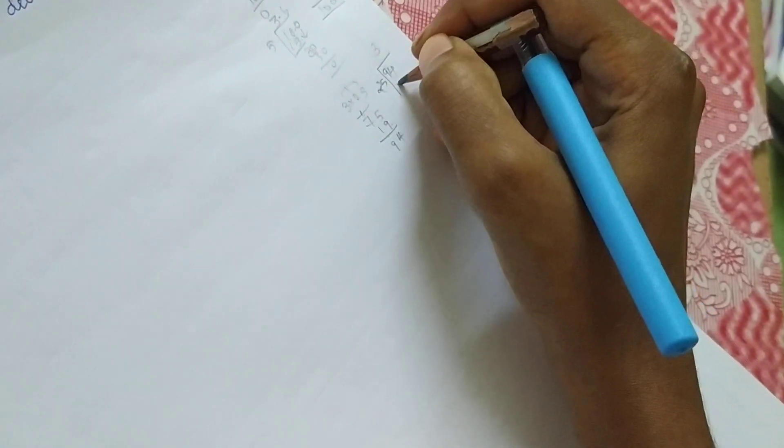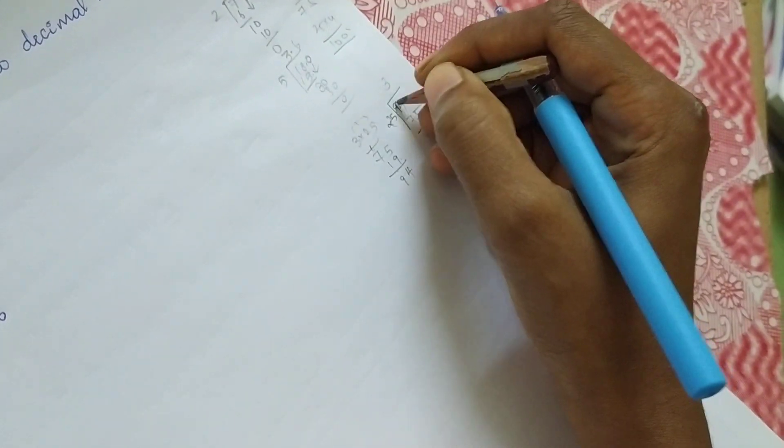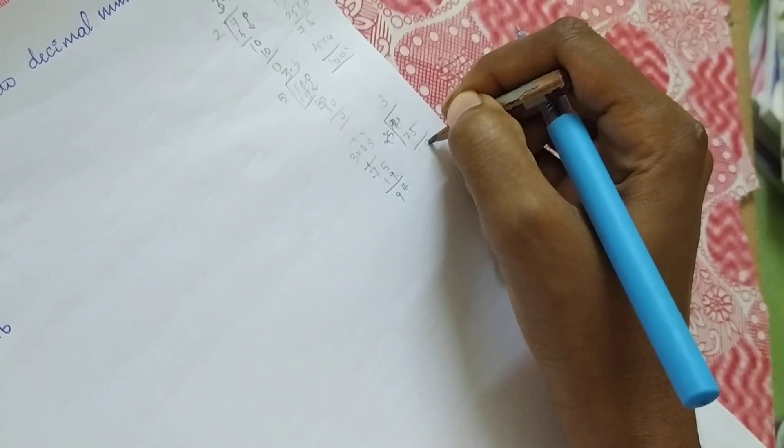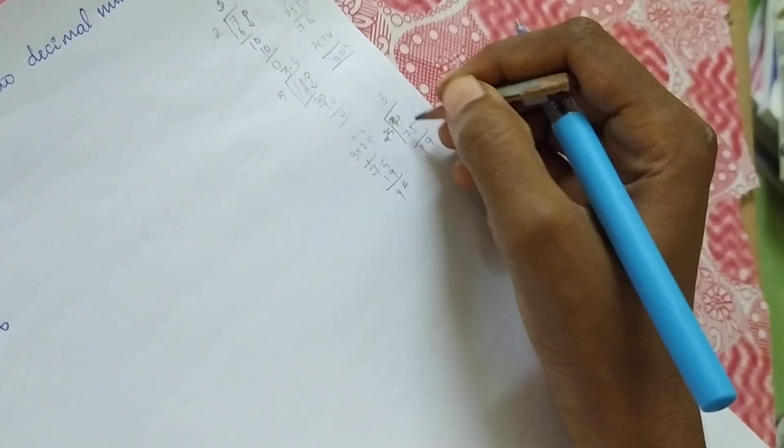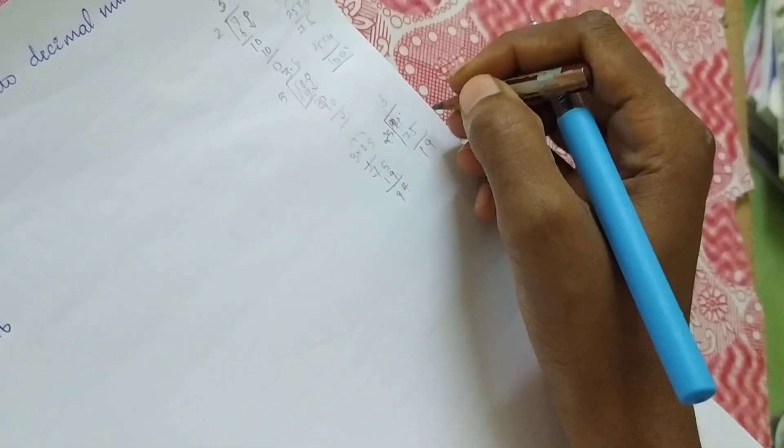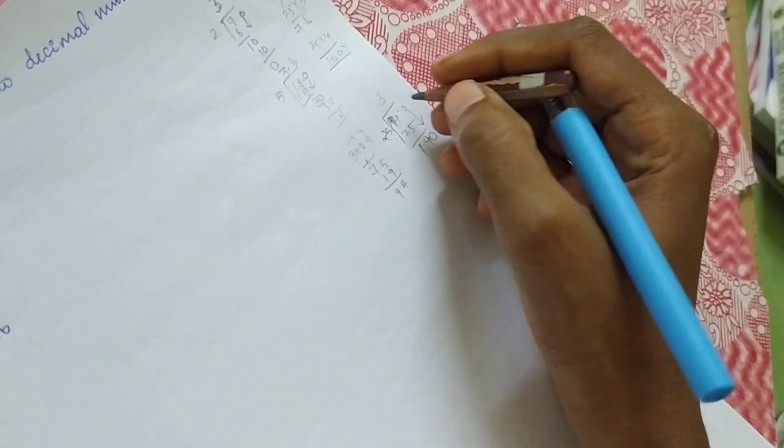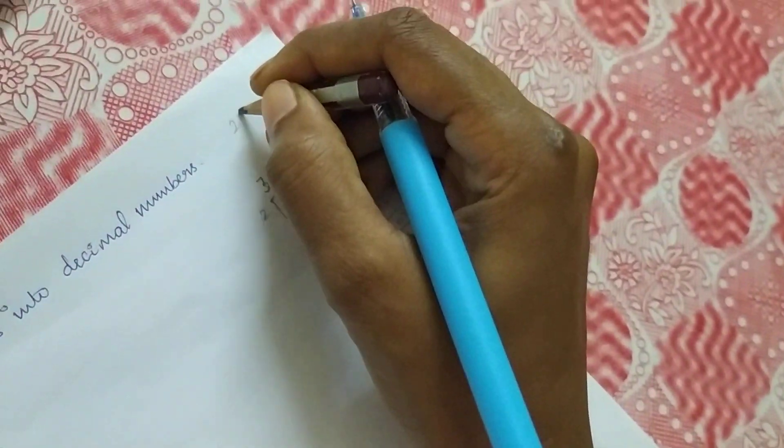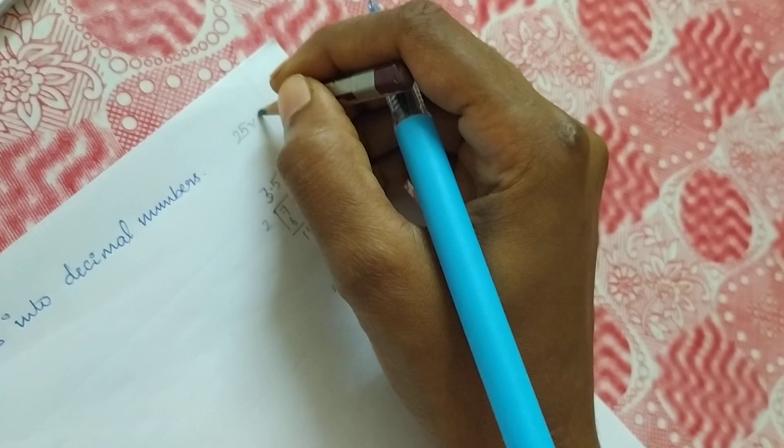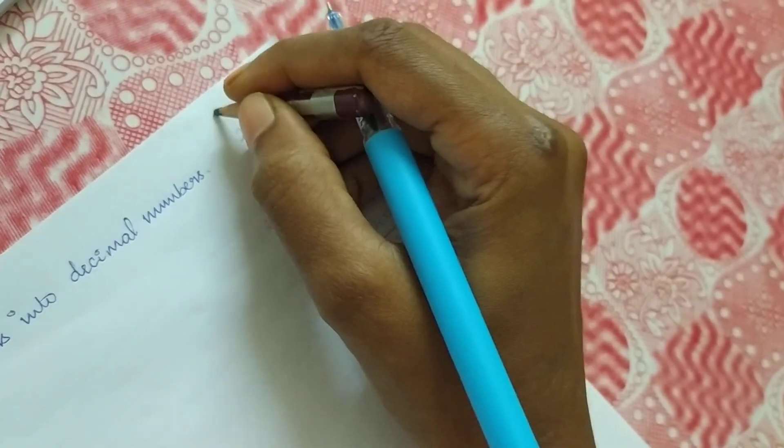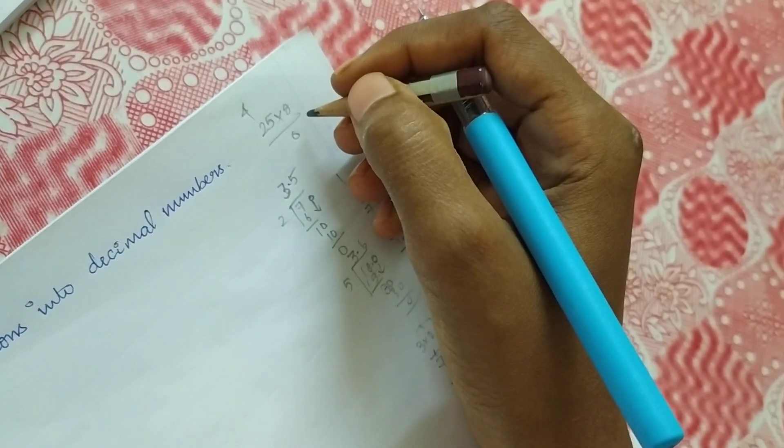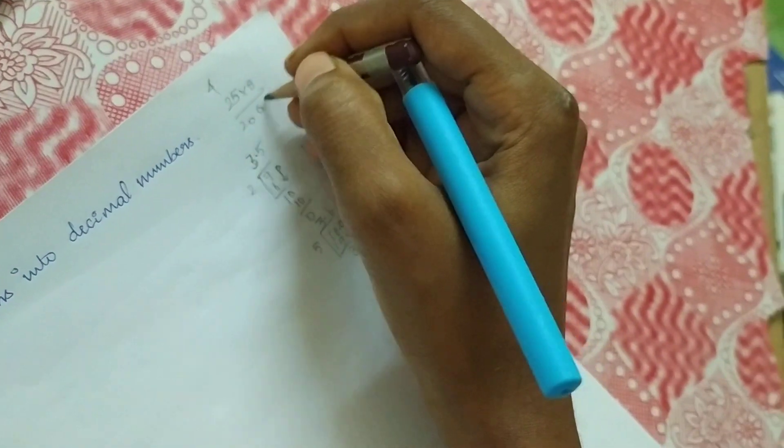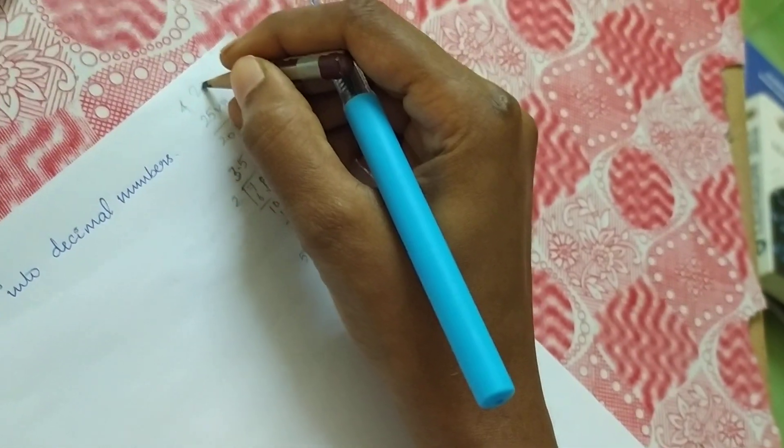Before that, 25 × 7: 5 × 7 = 35, 2 × 7 = 14 + 3 = 17, so 175.